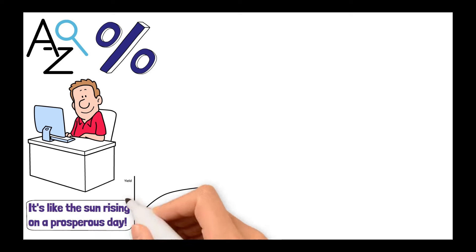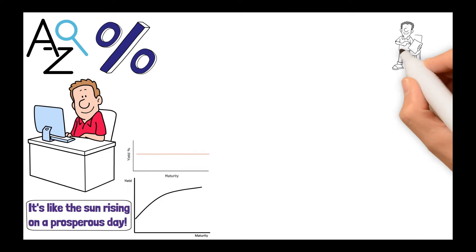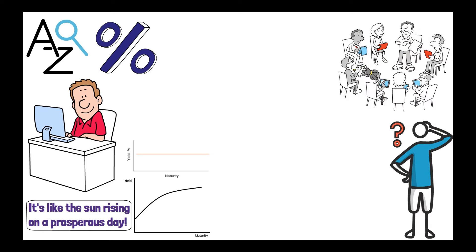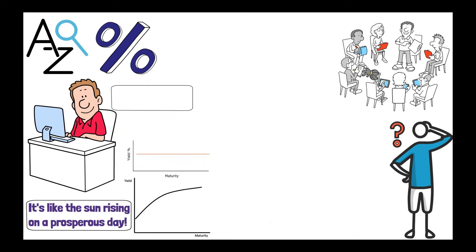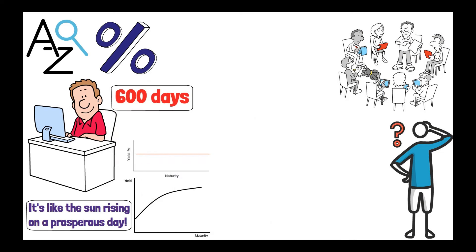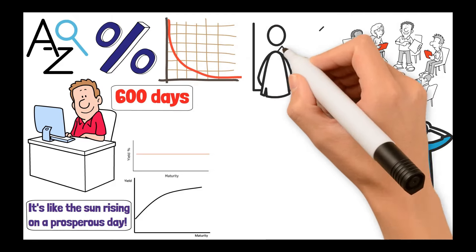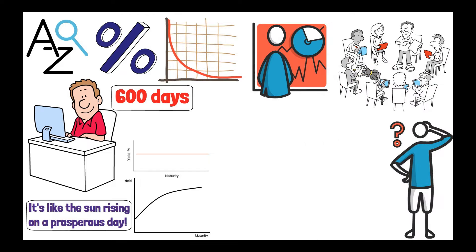And when it's flat, well, that's a flat yield curve, hinting at economic uncertainty. Investors are unsure, so short-term and long-term rates are playing a game of who blinks first. And when it flips upside down like it has over 600 days now, we've got an inverted yield curve. This is the fortune teller of finance, often predicting a recession.